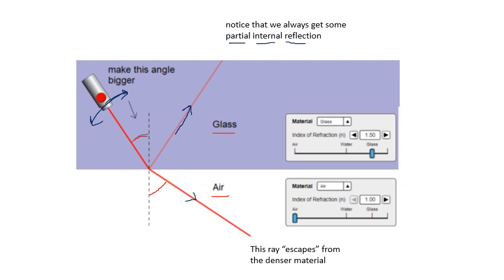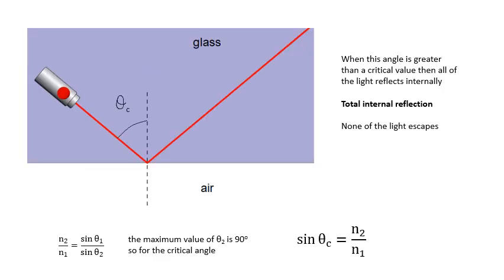However, if we keep making this angle bigger and bigger and bigger, then hopefully you remember from GCSE, we get total internal reflection. And that happens when this angle here is equal to or greater than a critical angle. When this angle is greater than a critical value, then all of the light reflects internally. And that is total internal reflection.